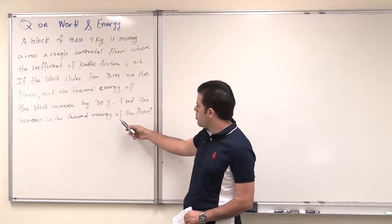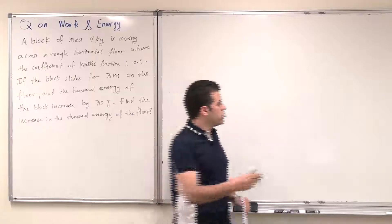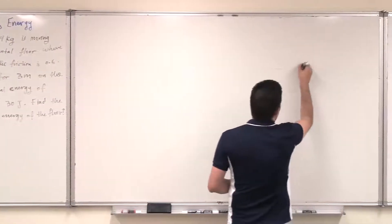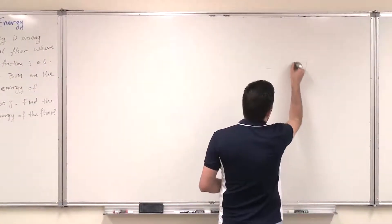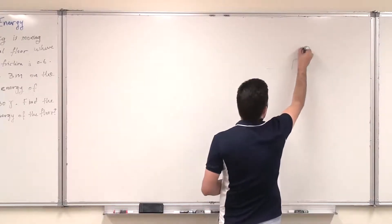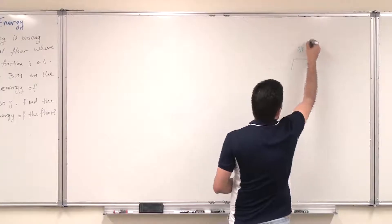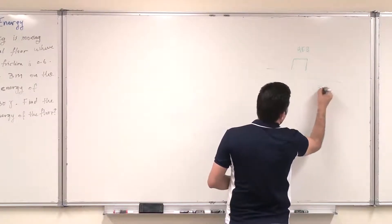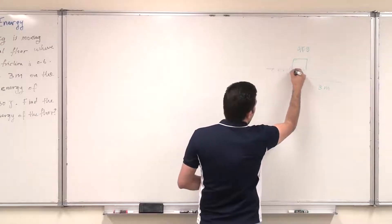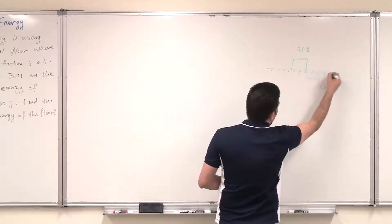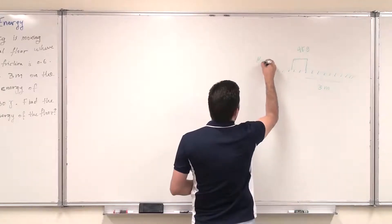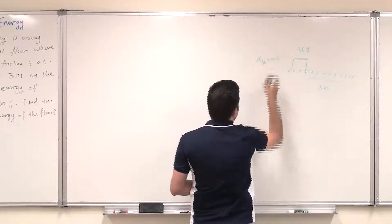Find the increase in the thermal energy of the floor. So clearly I have here a block sliding on a horizontal floor. This mass is 4 kilograms, it slides for 3 meters, on a rough horizontal floor, which means coefficient of kinetic friction is 0.6.